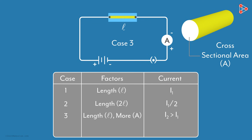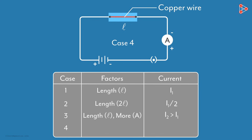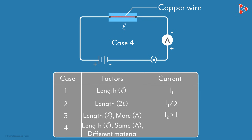The results we are getting are pretty interesting. Let's try out one last case. We use a copper wire instead of a nichrome wire. The length and cross-sectional area A will be the same as the original wire, but the material has changed entirely. When you measure the current, you will notice that it's more than I1.